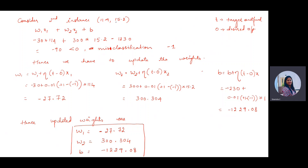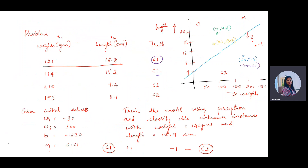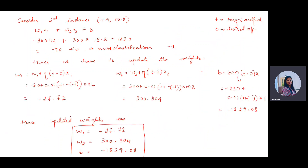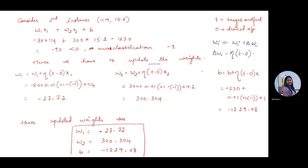Consider the second instance: X1 = 114, X2 = 15.2. We compute: (-30)(114) + (300)(15.2) - 1230 = -90. Since -90 < 0, the output is -1, but the target is C1 (i.e., +1). This is a misclassification, so we must update the weights using the perceptron training rule: delta(WI) = mu * (T - O) * XI.